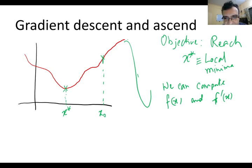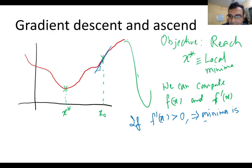So if I look at f'(x) at x0, there's a tangent here. The slope of the tangent is positive. So if f'(x) is greater than zero, it implies minimize towards the left. I'm talking about local minima only. And if f'(x) is less than zero, it means it is towards the right.